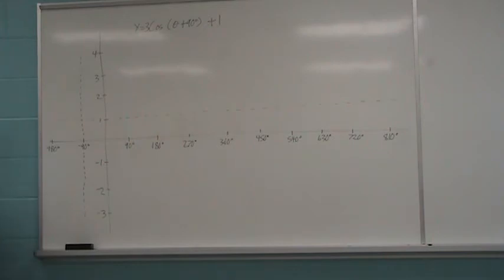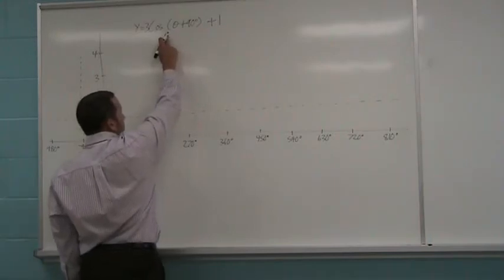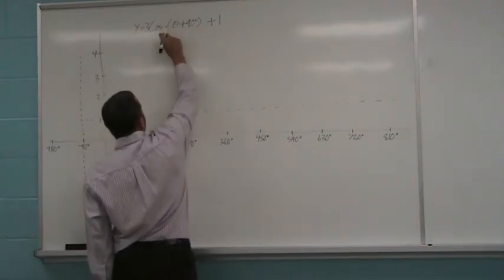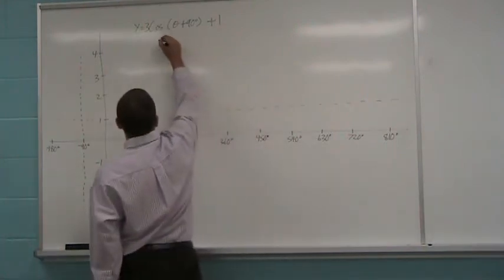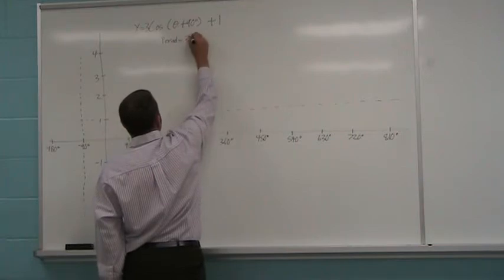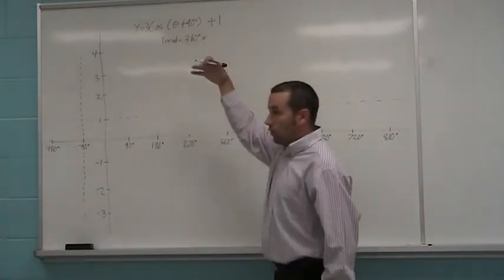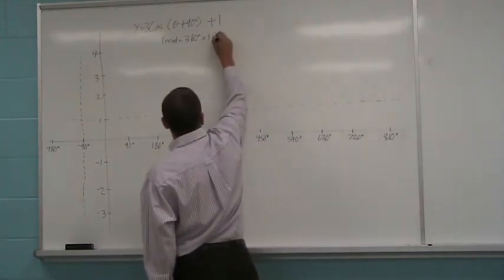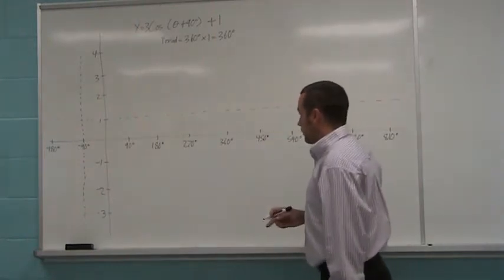There it is. Now, I have to say, where does my wave end? I have to look at the number in front of the bracket, that gives me my period. And the number that's here, even though it's not shown, is a 1. So again, this period is equal to 360 degrees times the reciprocal of 1. Well, the reciprocal of 1 is 1.